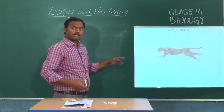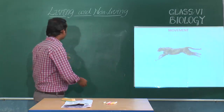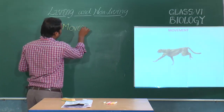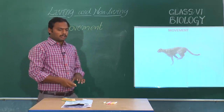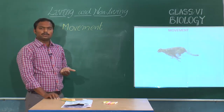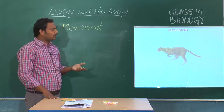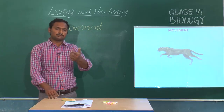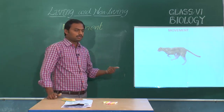The next important characteristic feature we can see in living forms is movement. The food we take releases energy during the process of respiration, and this energy is utilized to perform various activities like movement. We need to move from one place to another — for example, you come from home to school.